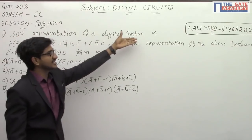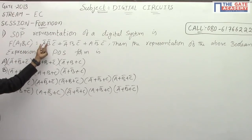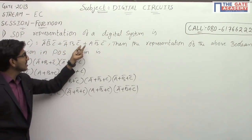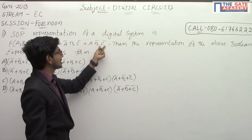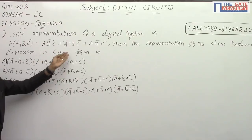The SOP representation of a digital system is f(A,B,C) = A̅B̅C̅ + A̅BC̅ + AB̅C̅. We need to find the representation of the above Boolean expression in POS form.